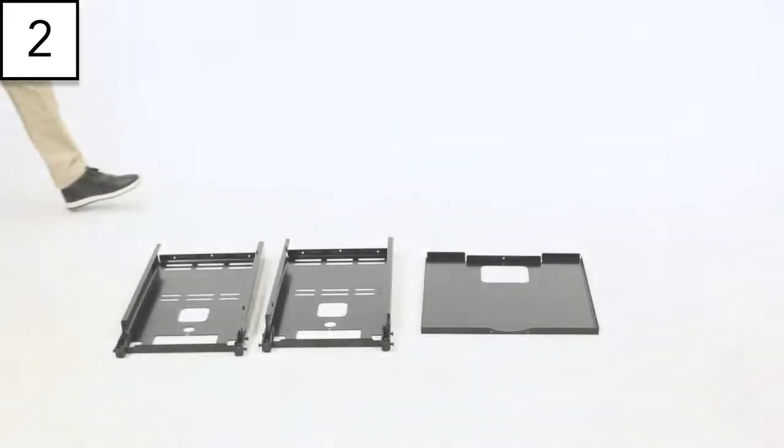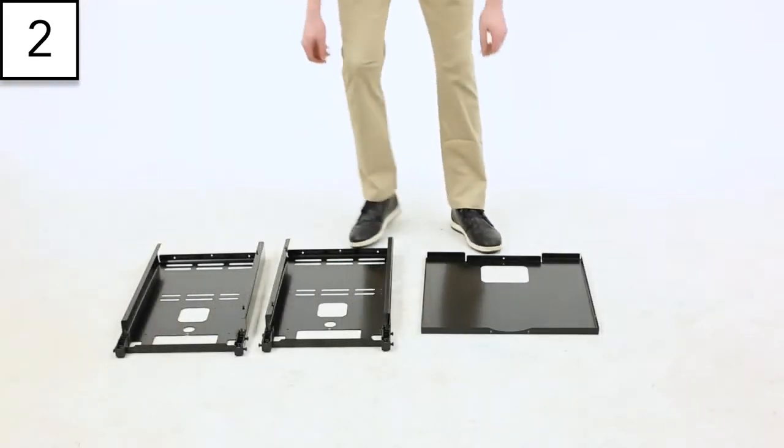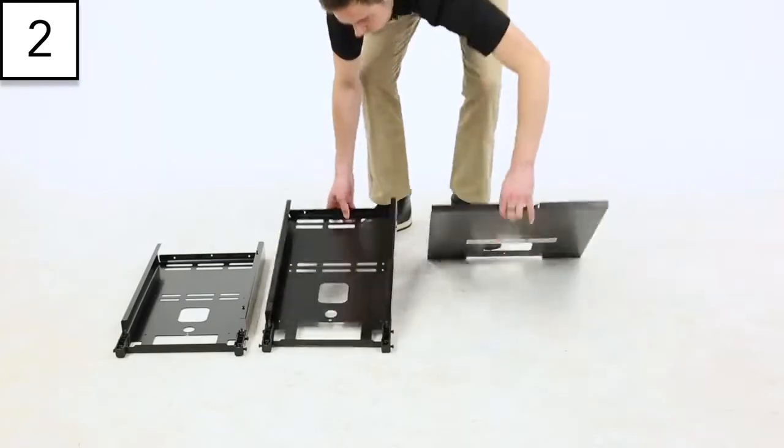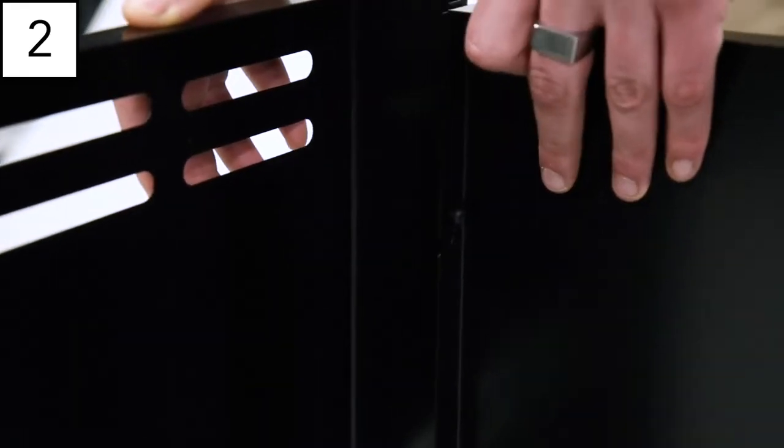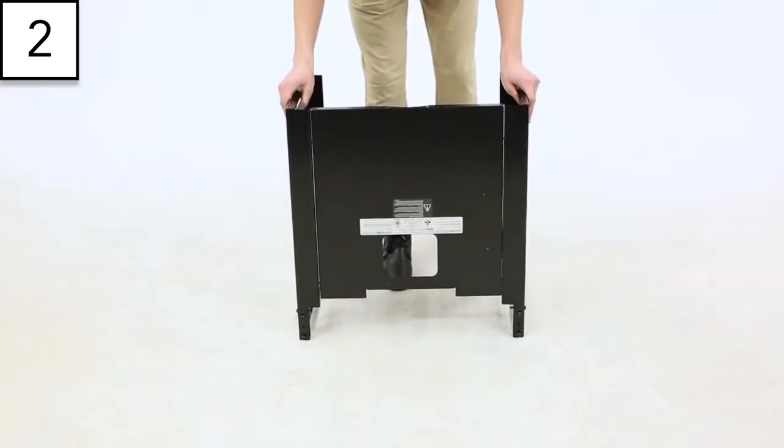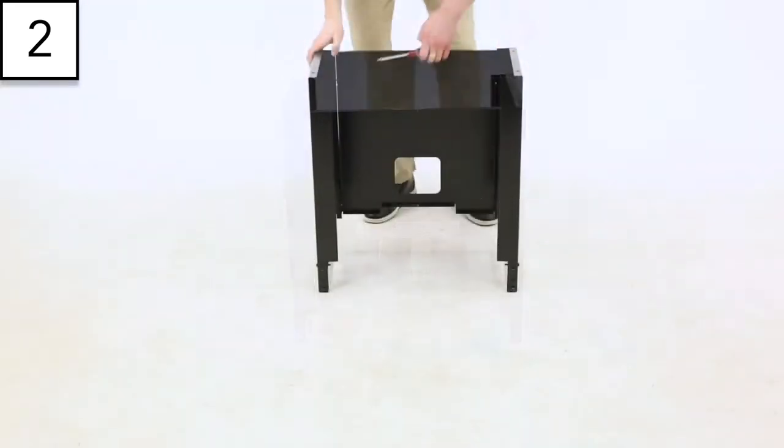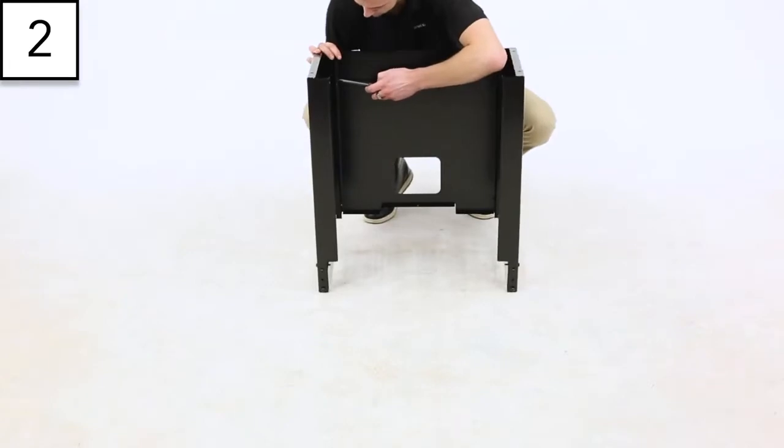Step 2. Take both side panels and the rear cabinet panel. Align the screws on both side panels with the opening on the rear panel. Using your screwdriver, tighten all four screws.